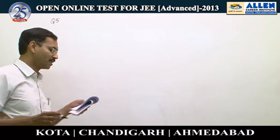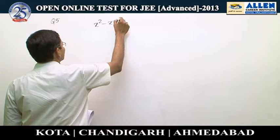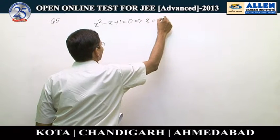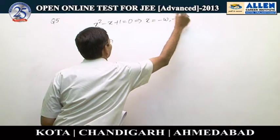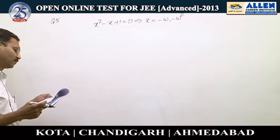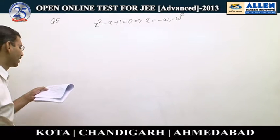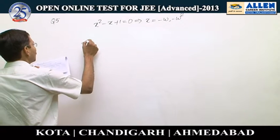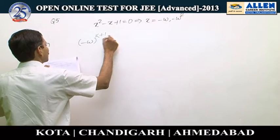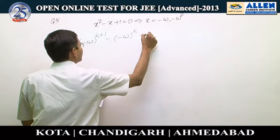Both the roots of x² - x + 1 = 0 are -ω and -ω². We know this fact. So if the second is dividing the first expression, it means -ω must satisfy the first expression: (-ω)^(k+1) - (-ω)^(k+1) should be 0.